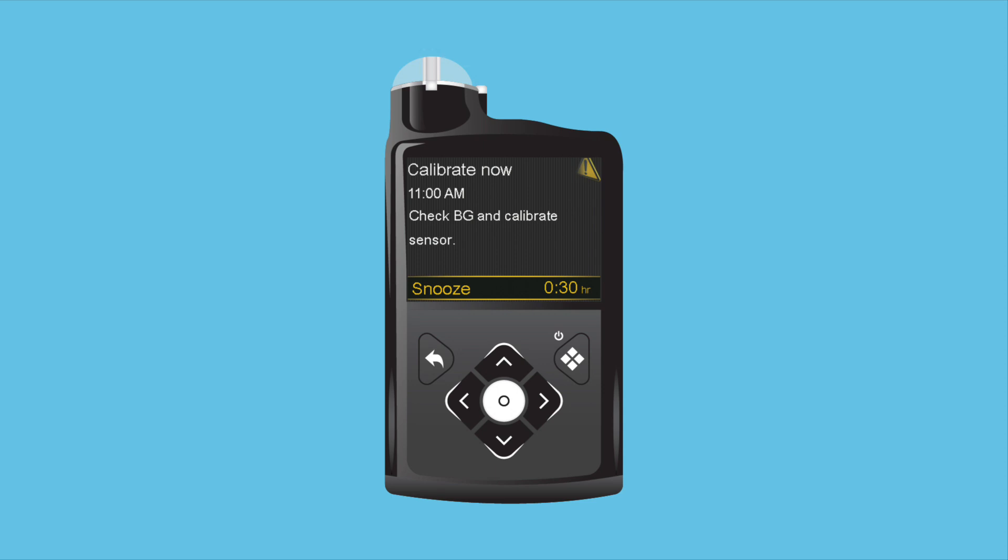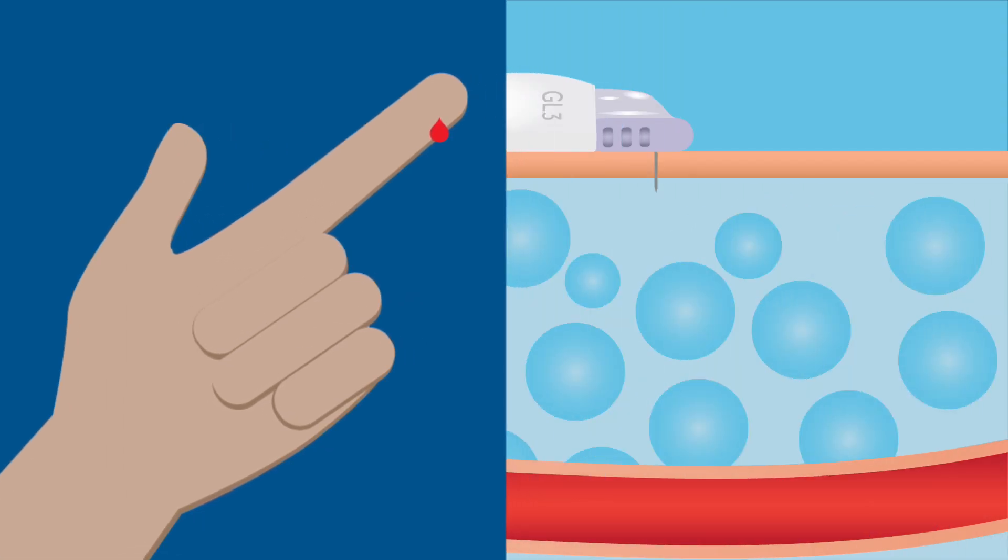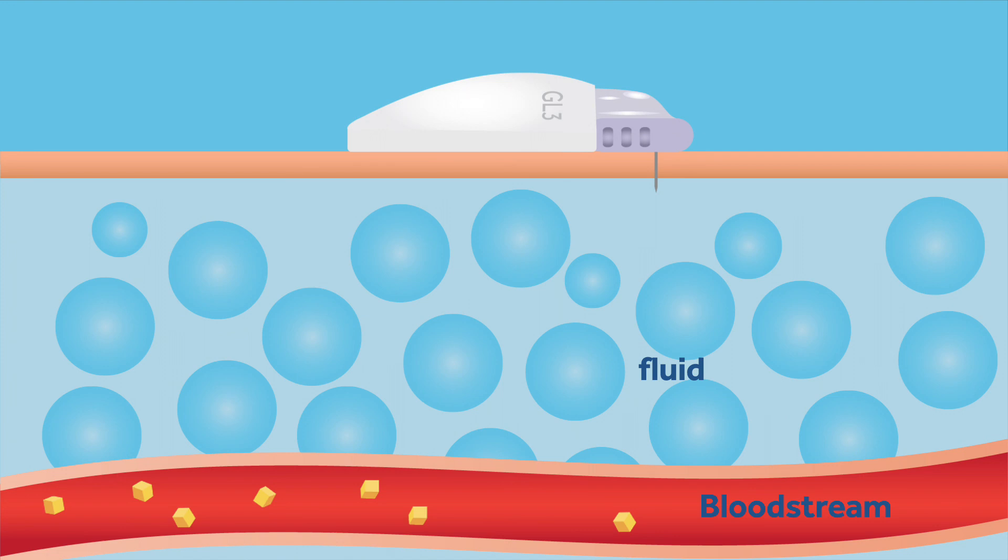Even though a BG meter reading is needed, Lisa sees that BG readings and sensor glucose readings don't match exactly. But why? The BG meter and CGM system measure glucose in two different places. A BG meter measures the glucose in the blood, and the sensor measures glucose in the fluid under the skin. Glucose travels through the blood first, then to the fluid before getting into the cells. Because of this, meter readings and sensor readings will be close, but will rarely match exactly.